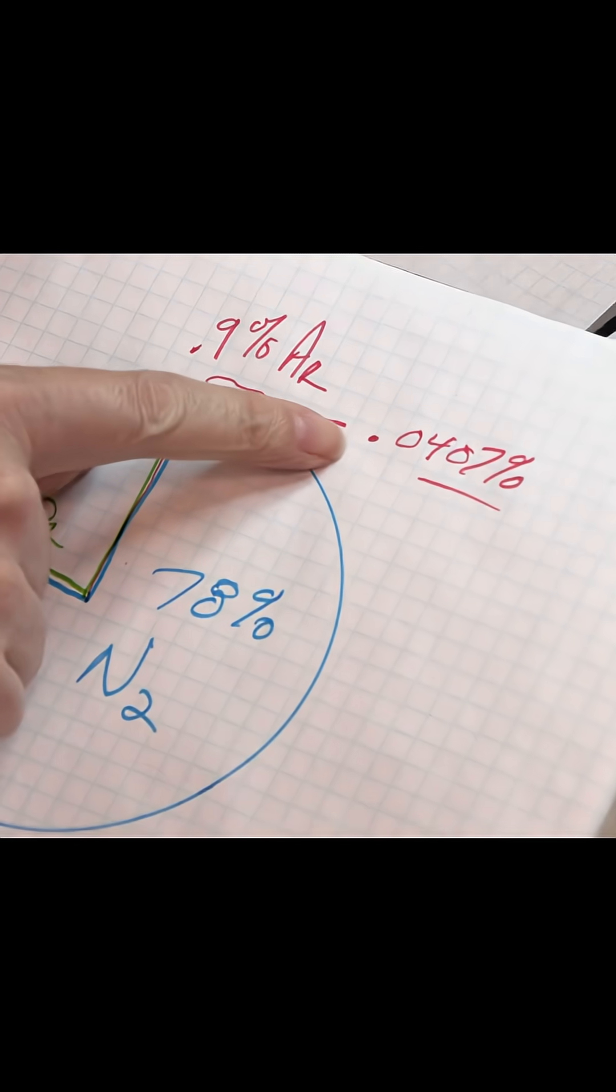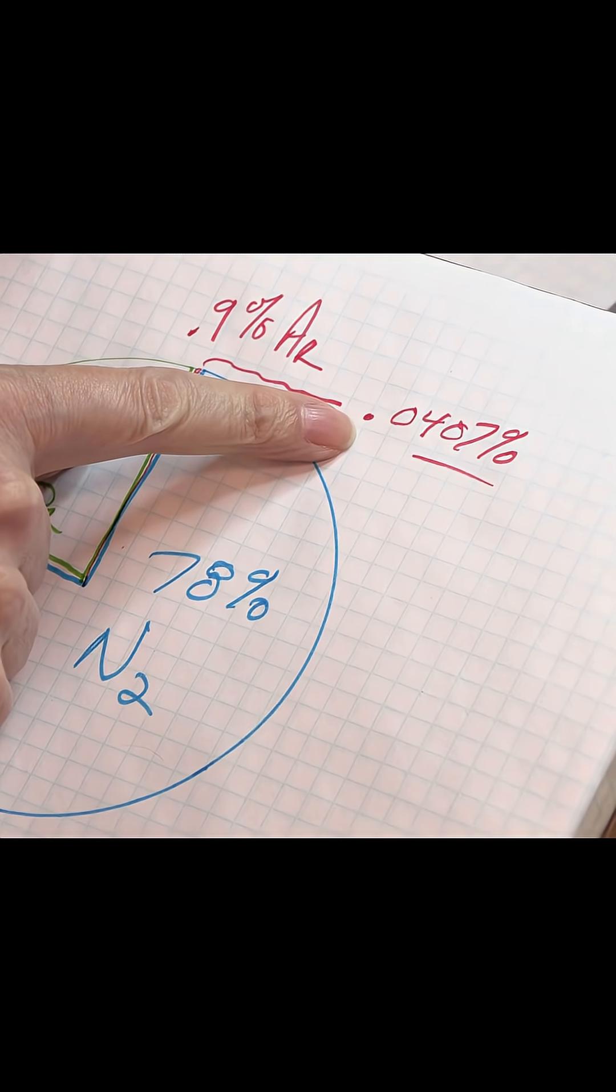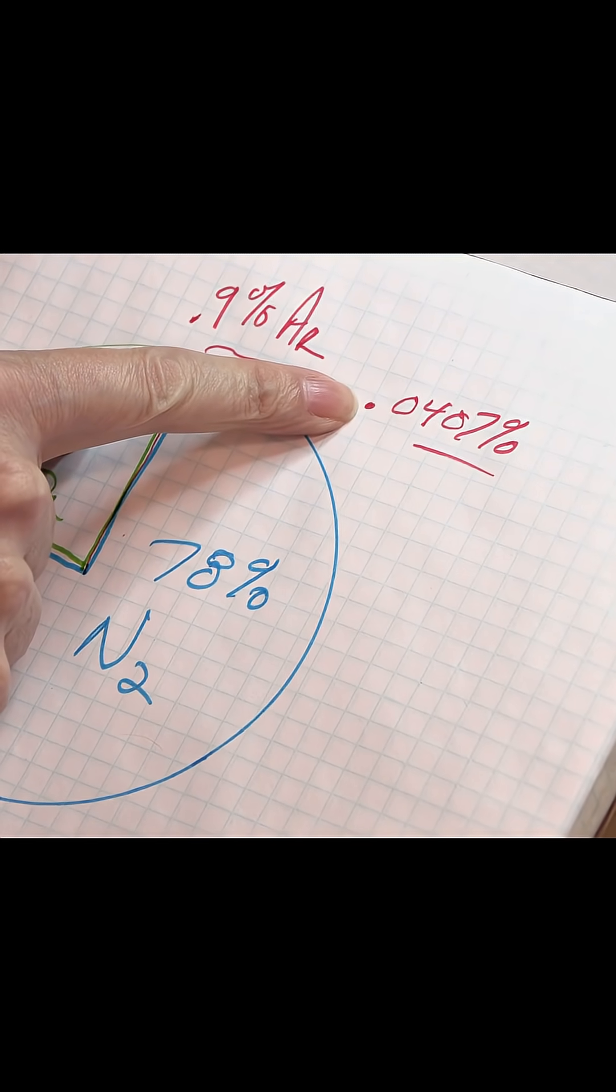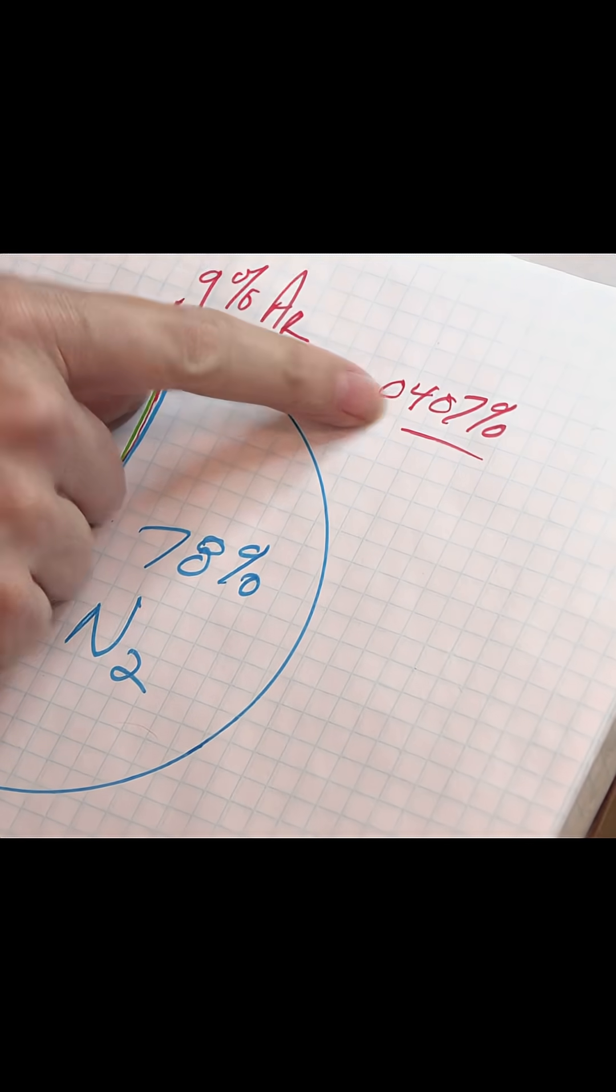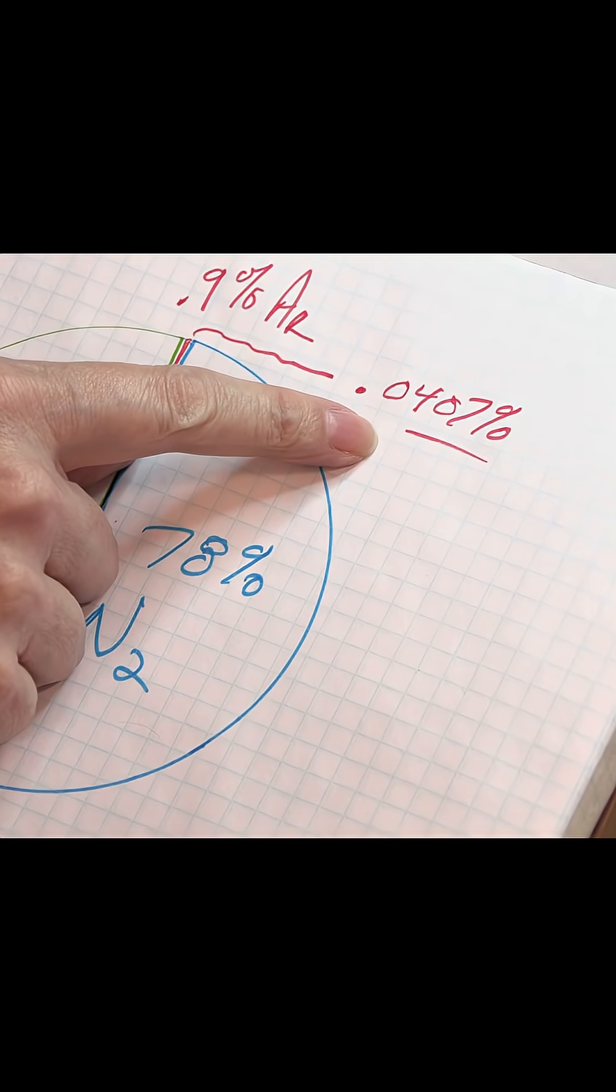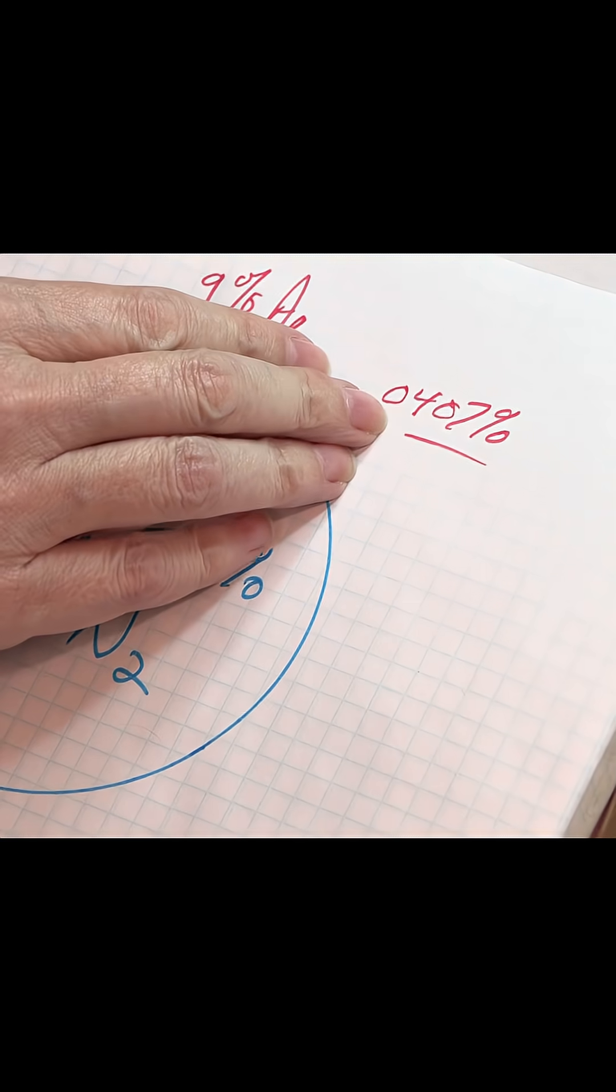About 0.04—that's not 4%, that's 4 one-hundredths of a percent and change of the atmosphere. Four one-hundredths of a percent carbon dioxide. A minuscule concentration.